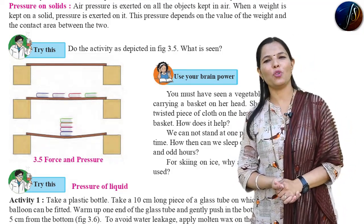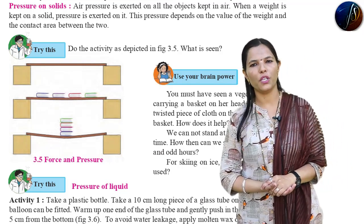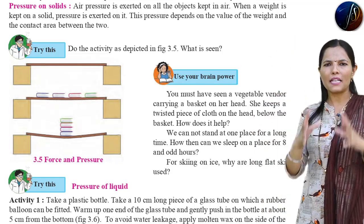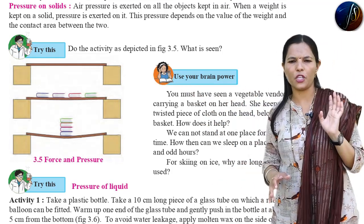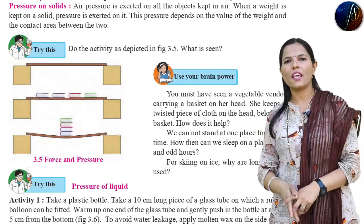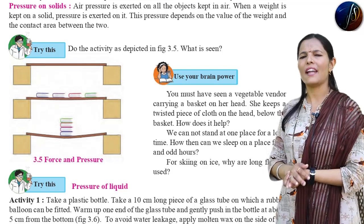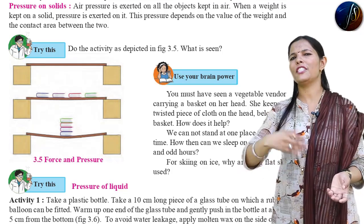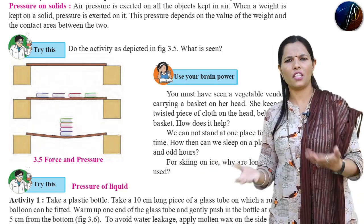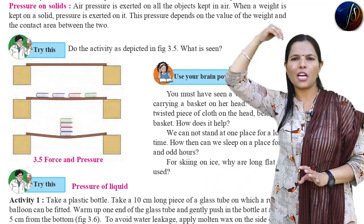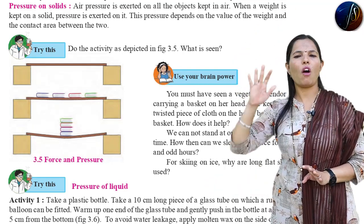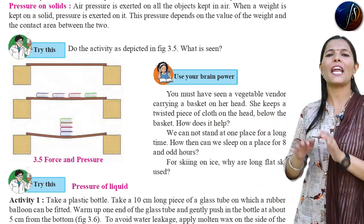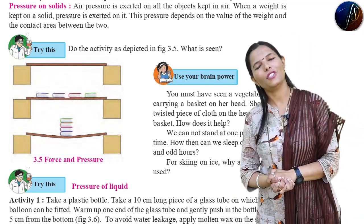Note down this answer in your notebook. Due to the twisted piece of clothes, the weight produced by that basket gets equally distributed. That is the first point. So it is very easy for the vegetable vendor to carry that basket. Due to the twisted piece of clothes, the weight of that basket gets equally distributed, and that is why the effect of that weight gets less.